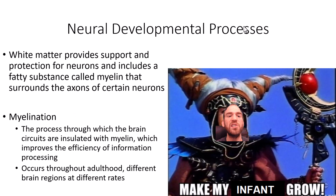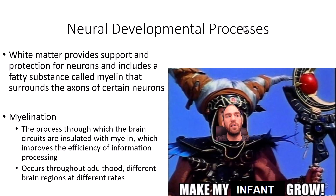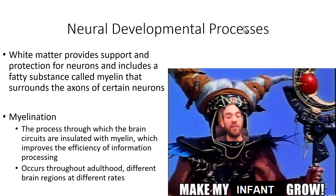White matter provides support and protection for neurons, including a fatty substance called myelin that surrounds the axons of certain neurons. Myelination — the process of insulating brain circuits with myelin — improves the efficiency of information processing and occurs throughout adulthood at different rates in different brain regions. Think of it like hopscotch: electrical signals jump from node to node along the axon, dramatically increasing transmission speed.